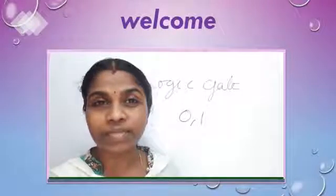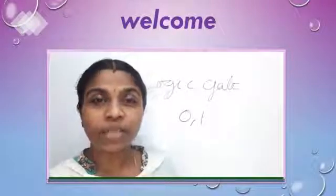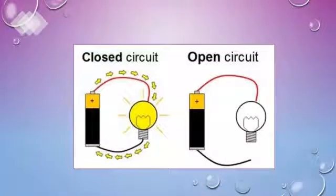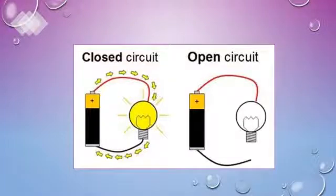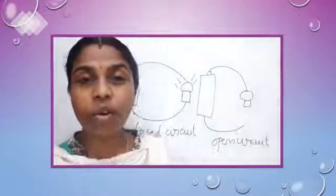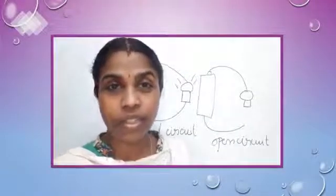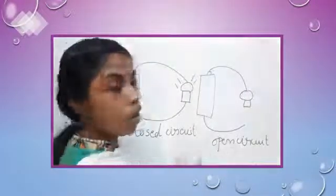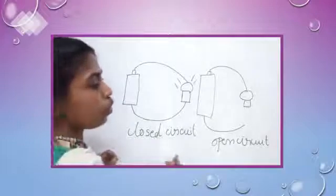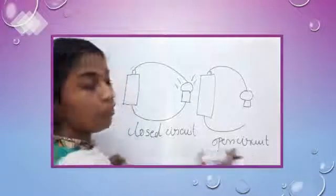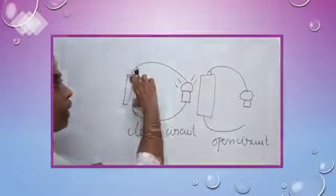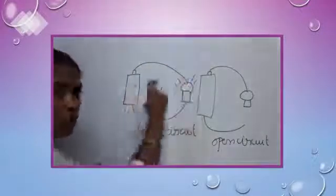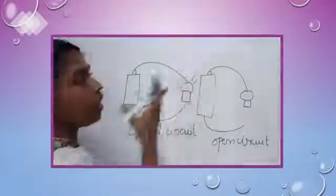What is an electronic circuit? You look at the picture — there you can see an electronic circuit. There you see two types of circuits. The first one is closed circuit and the second one is open circuit. In the circuit it contains one battery, two wires, and one bulb. If the circuit is closed, the bulb will glow.